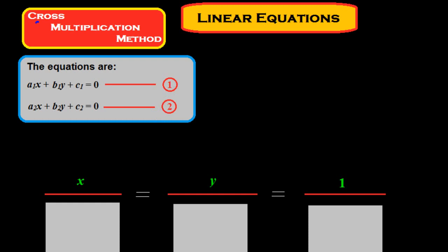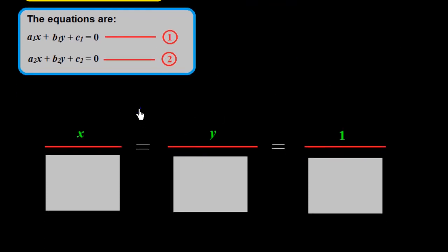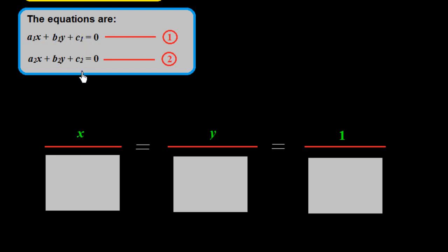Here you see I have written x over something, y over, and 1 over. If the equation is equal to 0 then we put 1 here; otherwise, if the constant term is on the other side of the variable terms, we put minus 1 instead of 1. Under x, in the denominator, we write down the coefficients of y and the constant terms — we do not write the coefficient of x.